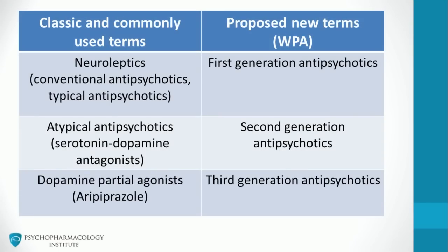Let's review the terminology we just discussed. On the left are the classic and commonly used terms; on the right is the new terminology proposed by the World Psychiatric Association. Neuroleptics, as we discussed, fall under the category of conventional antipsychotics, typical antipsychotics, or antipsychotics. The new terminology calls them first generation antipsychotics.